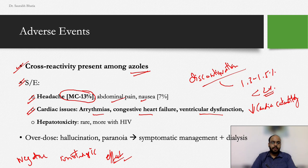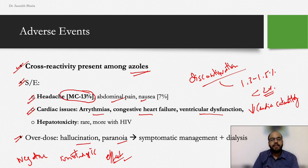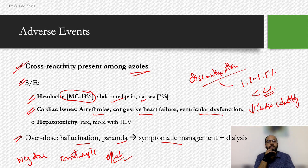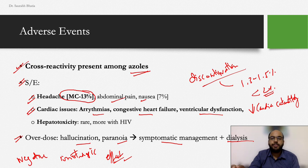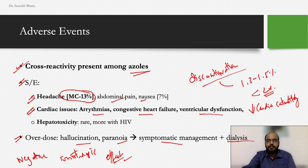Overdose of fluconazole has been shown to cause hallucinations and paranoia. Management is symptomatic — ensure the patient is vitally stable and adequately sedated. Dialysis should also be considered, because fluconazole is excreted 80% unchanged in urine; dialysis can efficiently filter it from the circulation and is therefore useful in fluconazole overdosage.